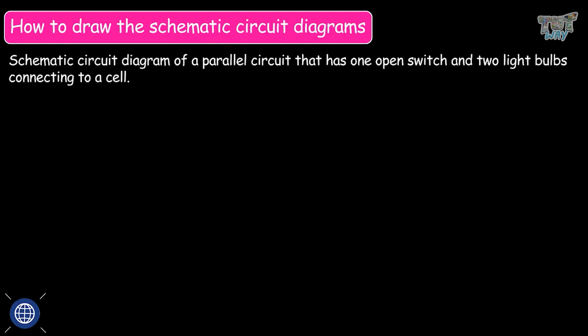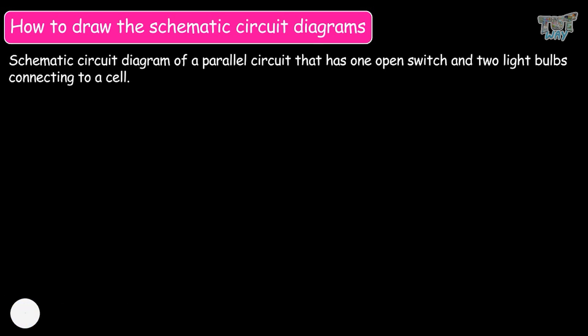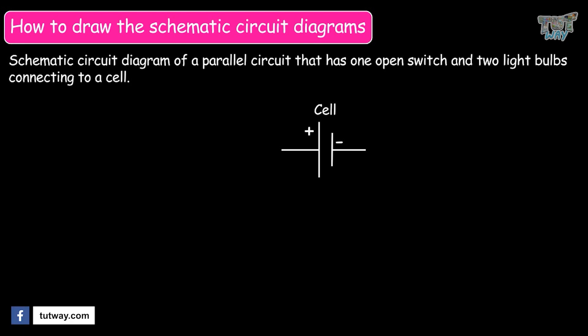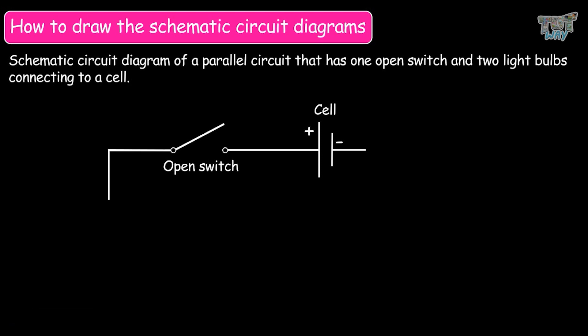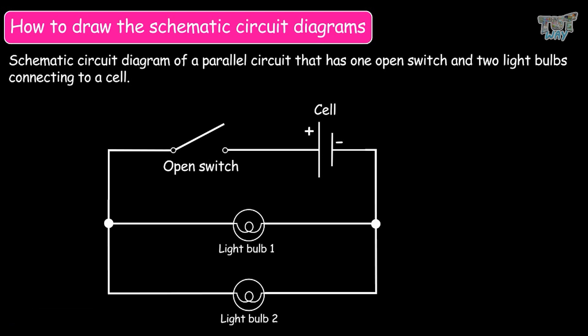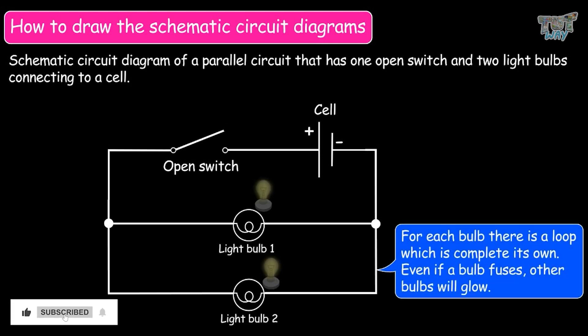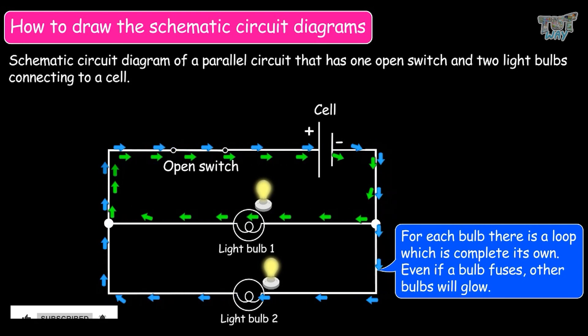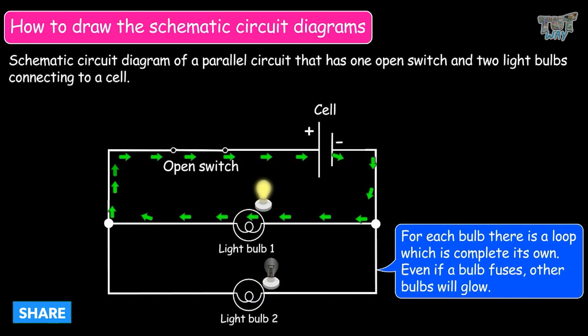Now we will see how to draw a schematic diagram of a parallel circuit that has one open switch and two light bulbs connecting to a cell. Draw a symbol of a cell, then connect it to the symbol of an open switch, and then draw the symbol of two bulbs in parallel. You can see how the parallel circuit looks like a ladder. The bulbs are not connected in series in one loop; for each bulb there is a complete loop. Even if a bulb fuses, the other bulbs will glow.